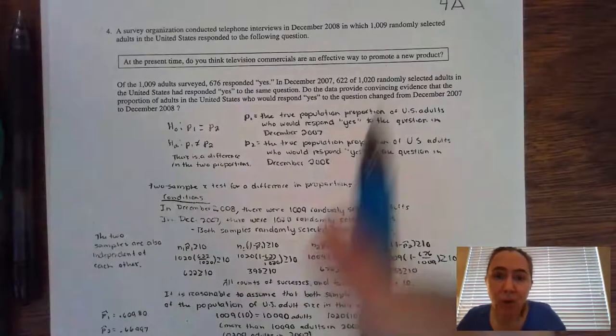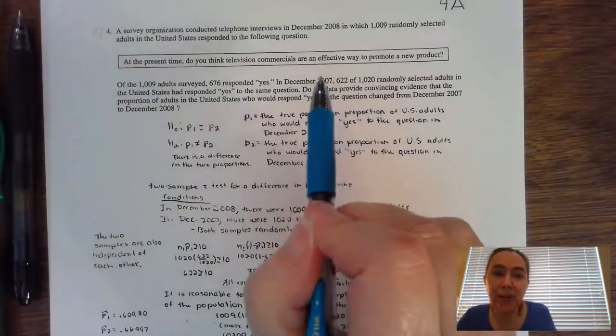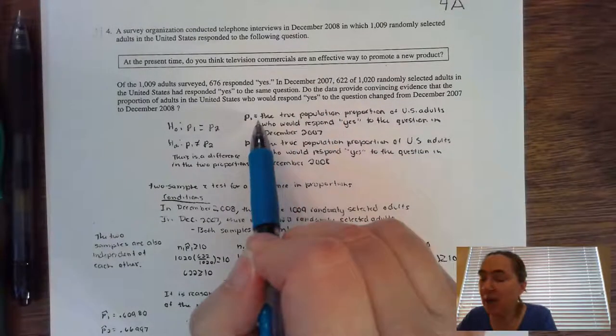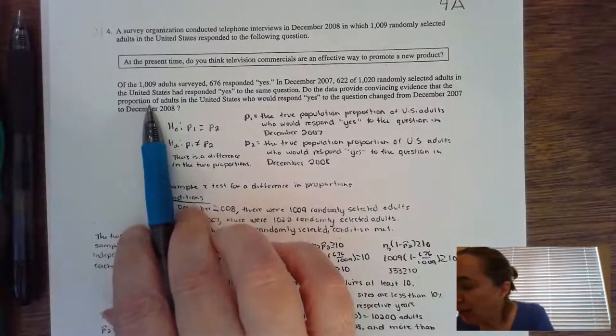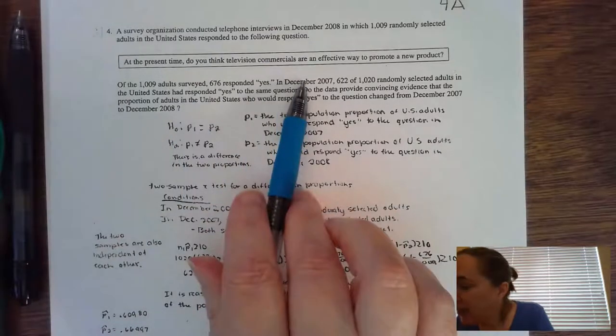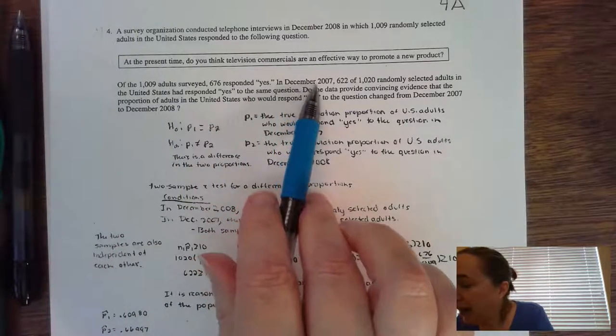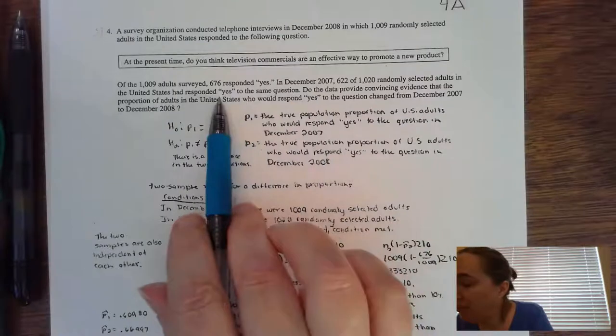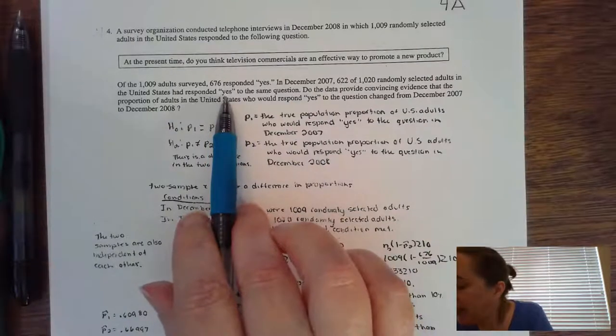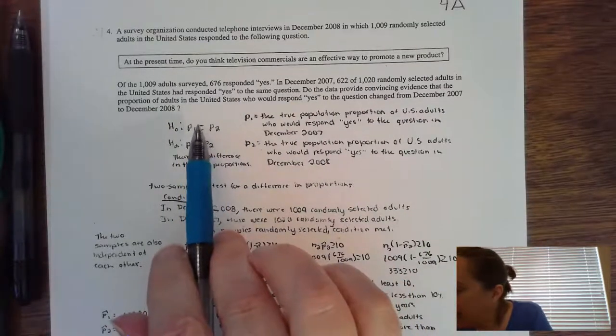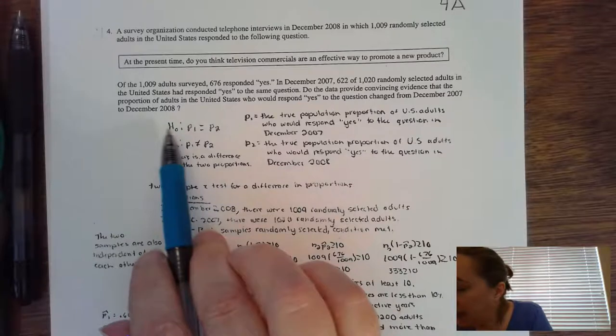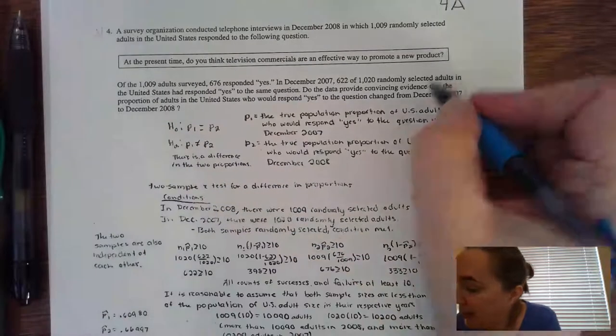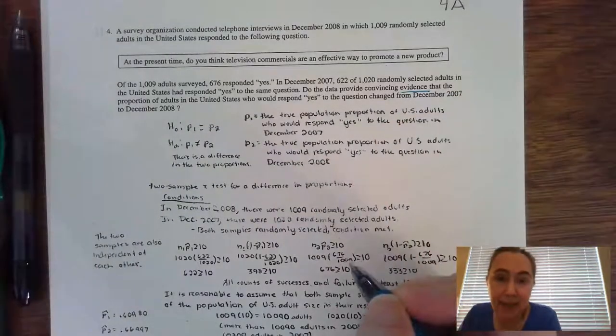And they gave you a question, it starts you thinking about wording bias, but then it moves into a survey of adults that in 2007 they had a survey and some numbers said yes. They did it again in the year 2008, and the question is, do the data provide convincing evidence? So you know it's a test at this particular point.